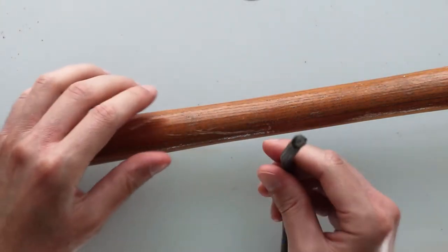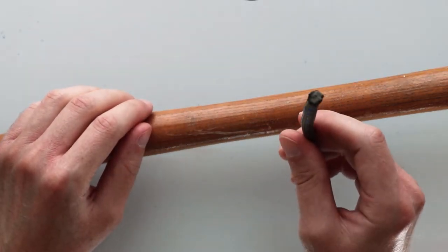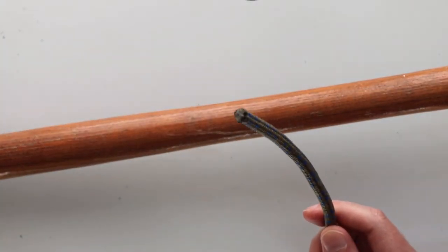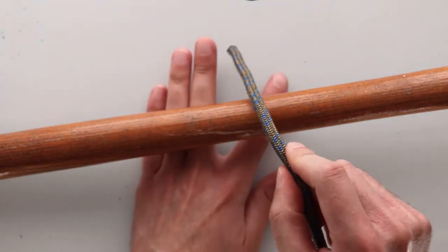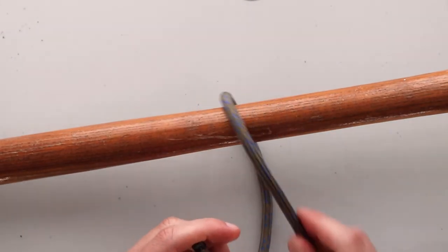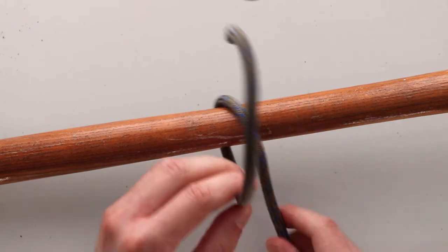I have my pole here and the working end of my rope or the short end of my rope. The first thing I'm going to do for the clove hitch is make a full loop over the top of my pole.